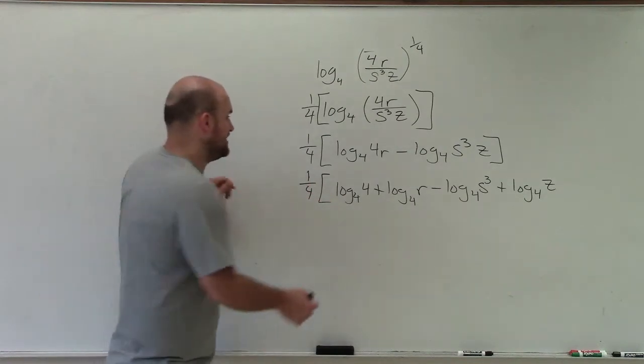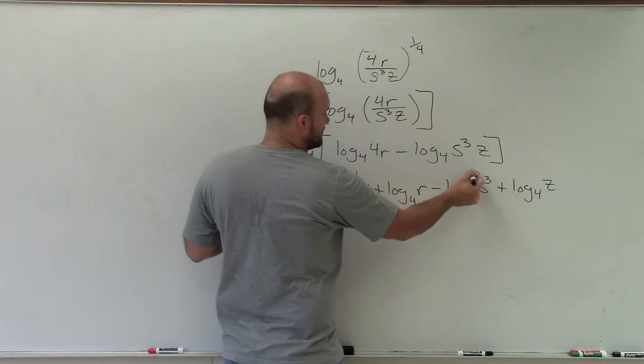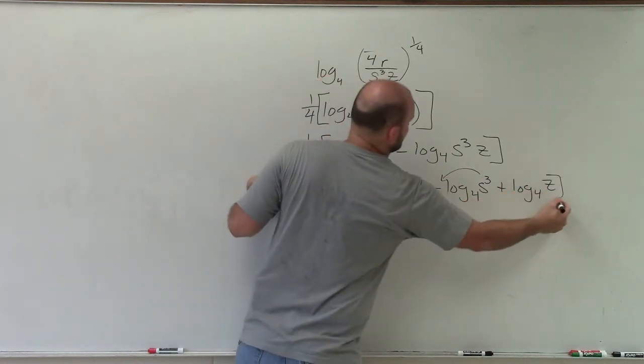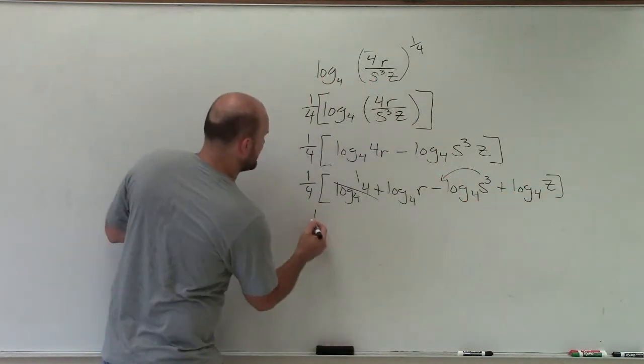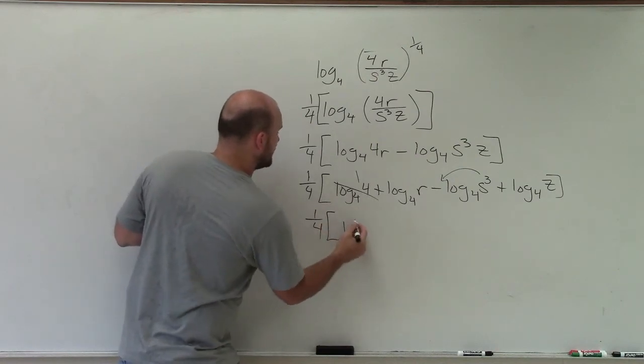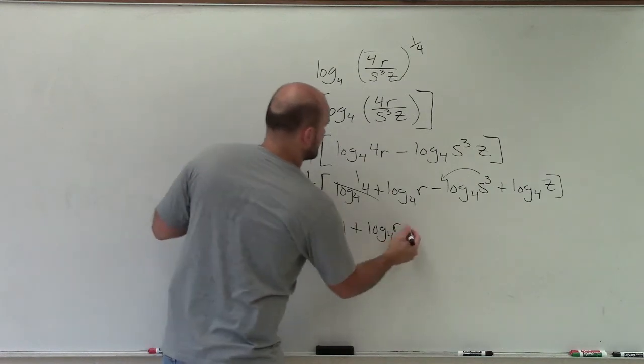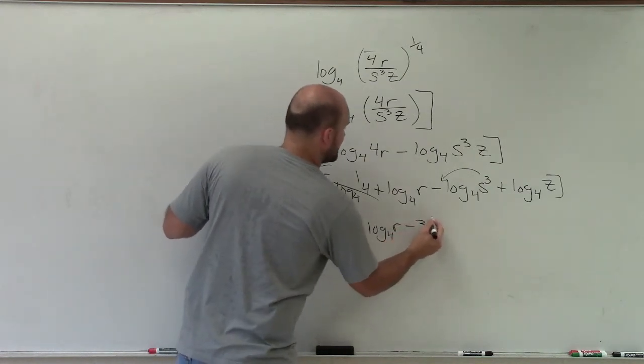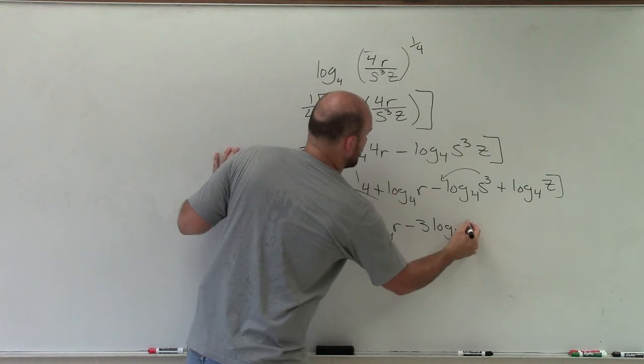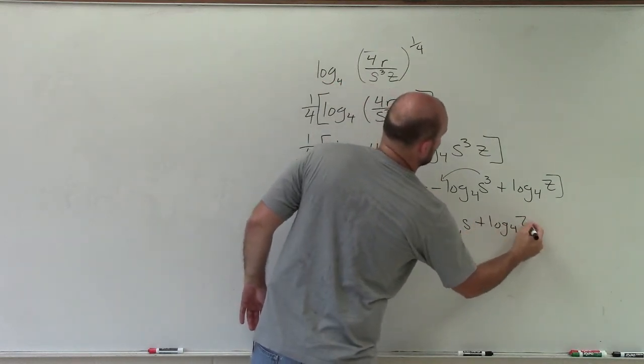Well now, log base 4 of 4, we know that's 1, so that's helpful. Right? Then here, I can bring the 3 down in front, and there's really nothing else I can do with log base 4 of z. So my final solution is 1 fourth 1 plus log base 4 of r minus 3 log base 4 of s plus log base 4 of z.